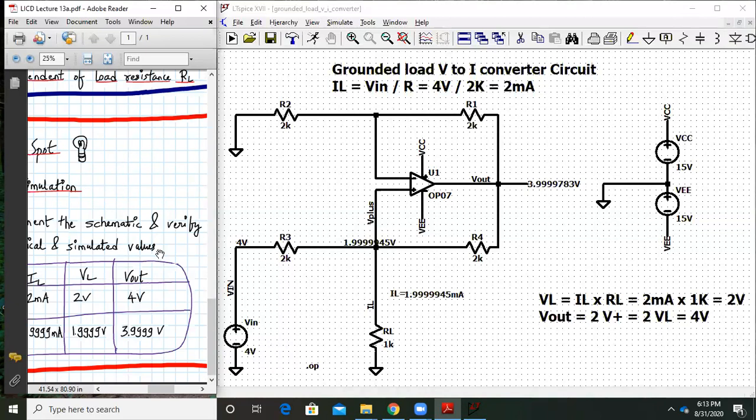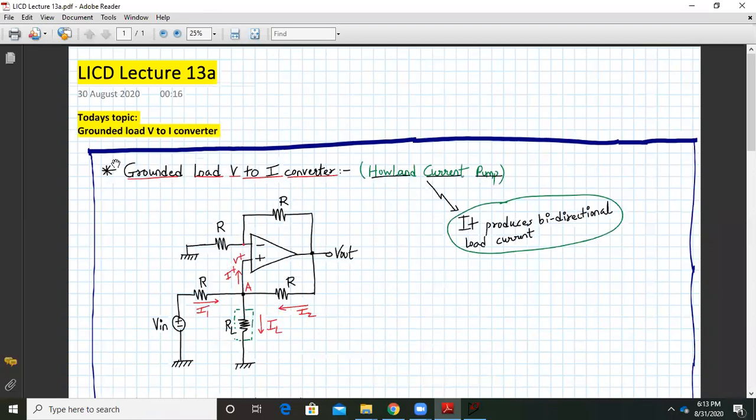This way we have converted the input voltage into an output current. That's the grounded load V2I converter and we have completed the objective of today's session. Thank you for joining. We will cover another application of op-amp in next lecture. Until then have a good day and thank you.